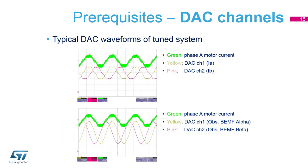Now we can see the typical waveforms of a tuned system, where the phase currents are shown in yellow and pink. On the second picture we can see the reconstructed back EMF alpha and beta in a perfectly sinusoidal manner. The green signal comes from the current probe and is a bit noisy due to switching noise. You can see that the internal current reading is clean without this noise.